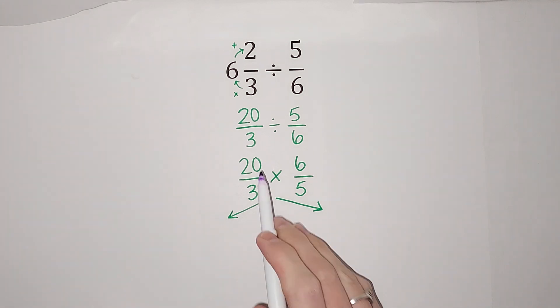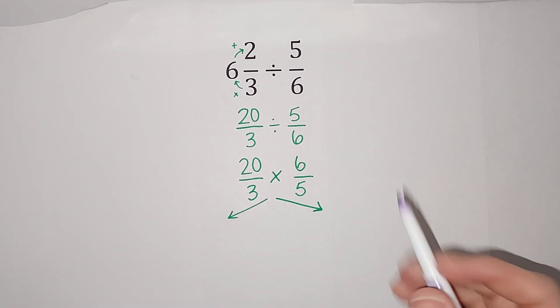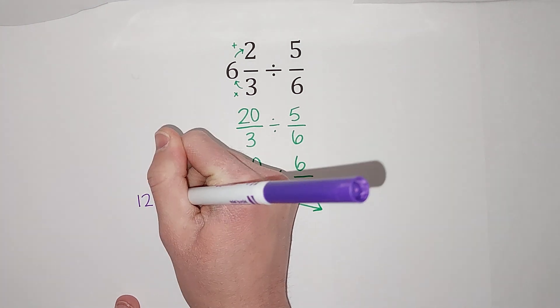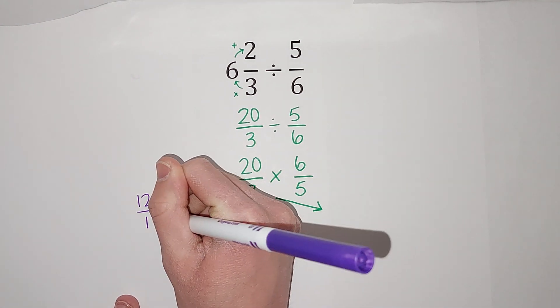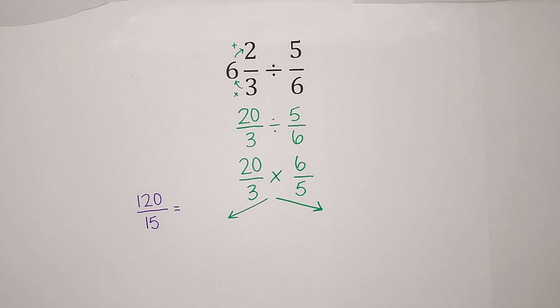So when I do that, I multiply straight across. So 20 times 6 gives me 120, and 3 times 5 gives me 15. When I simplify that down, I get 8.